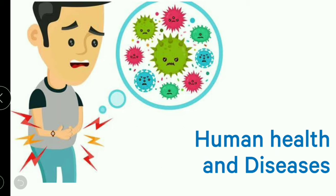Sporozoites attack the liver. Then schizonts form. Merozoites attack red blood cells (RBCs), and then the gametocyte stage occurs.